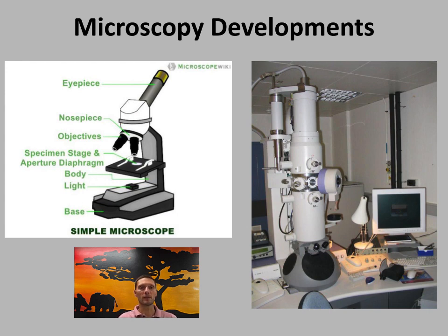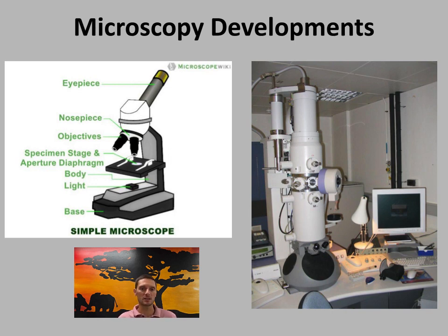With a double-lens microscope, you look through the eyepiece, which is typically 10x magnification, and then you have a rotating set of lenses — the highest lens is typically about 40x. Those two multiplied together allow us to look at objects that are 400 times magnified, which allows us to see much smaller components and the components of cells.